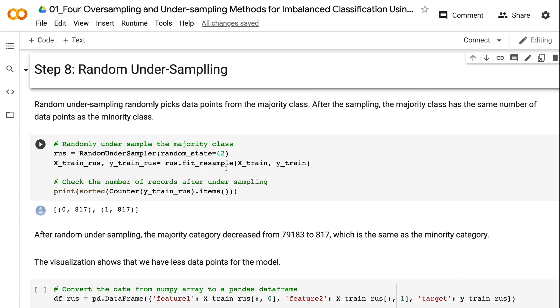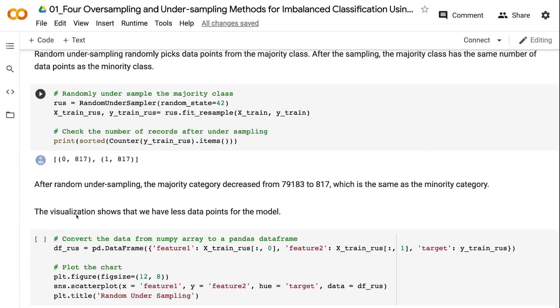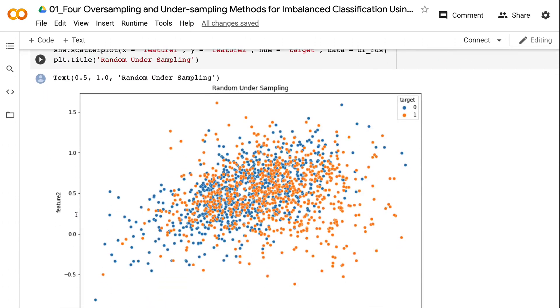After random undersampling, the majority category decreased from 79,183 to 817, the same as the minority category. The visualization shows that we have fewer data points for the model.